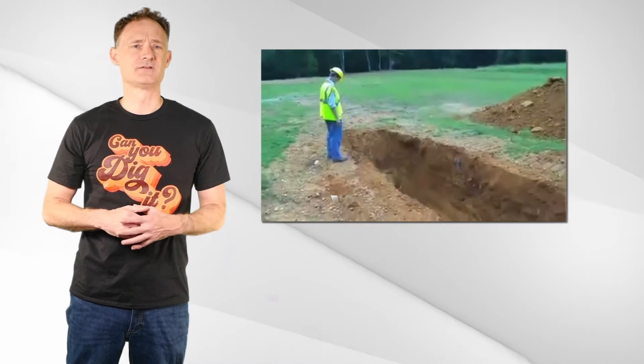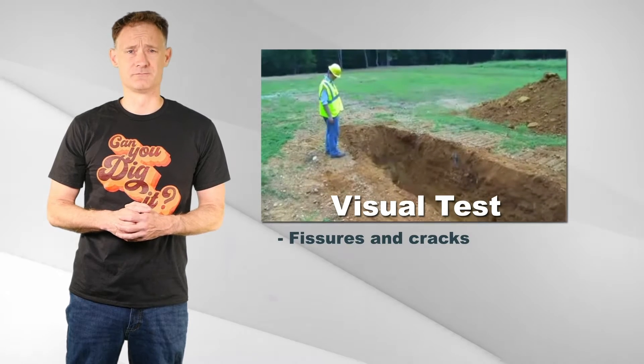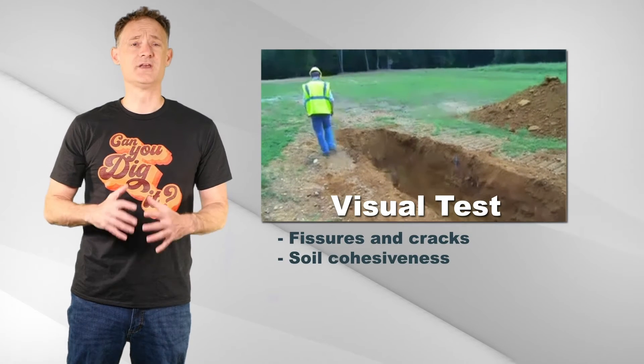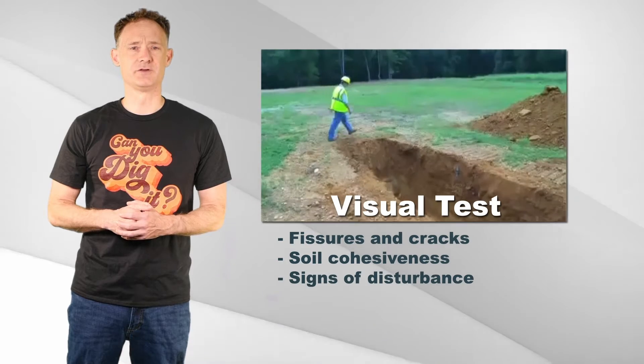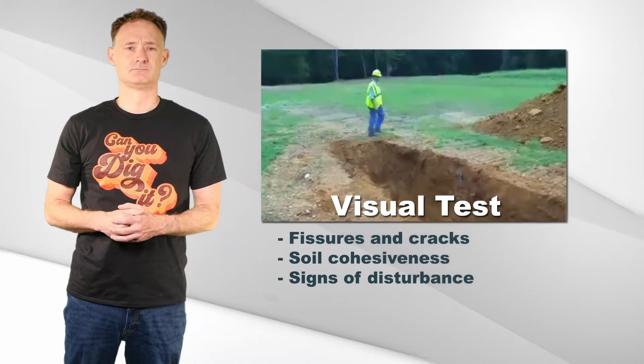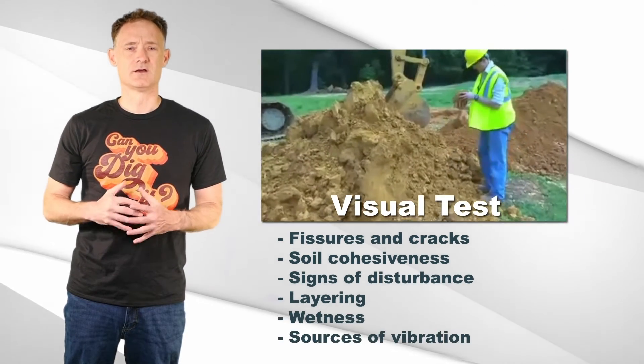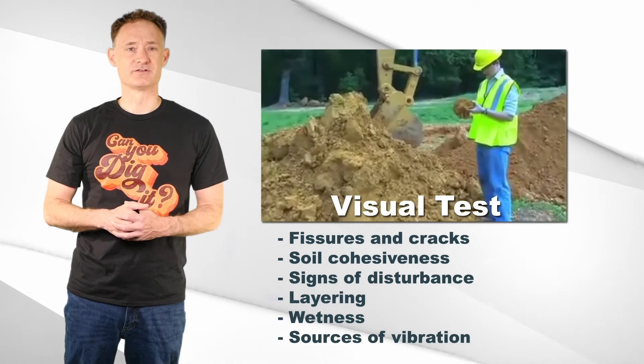When classifying soil, it must be classified with at least one visual test and one physical test. A visual test involves inspecting the soil for fissures, cracks, cohesiveness, signs of previous disturbance, soil layering, wetness, and sources of vibration.